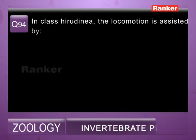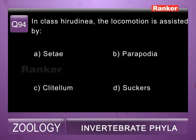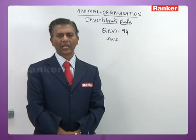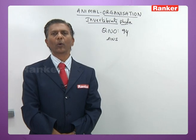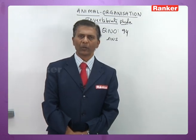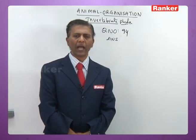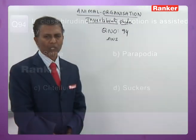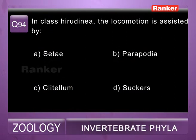Question ninety-four: in class Hirudinea, locomotion is assisted by — a) setae, b) parapodia, c) clitellum, d) suckers. In Hirudinea, locomotion is by suckers because leeches lack parapodia and setae. So ninety-fourth question correct answer is d) suckers.